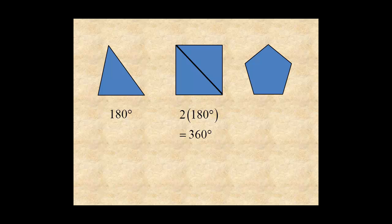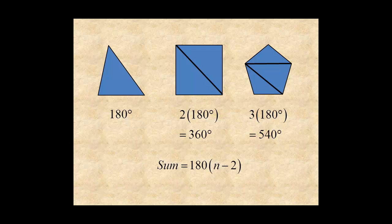For a five-sided figure like this pentagon you can draw two diagonals, dividing the figure into three triangles. So the sum of the interior angles is 3 times 180, or 540 degrees. In general, the sum of the measures of the interior angles of a polygon with n sides is 180 times (n minus 2).